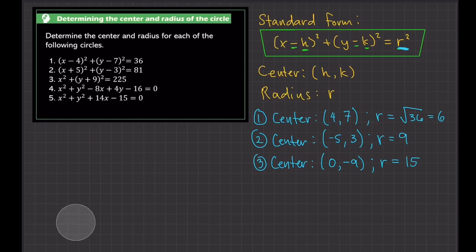Now for numbers 4 and 5, these are written in general form. What we need to do is convert or transform these equations into standard form, because in general form we cannot easily identify the center and radius. So for number 4, we are going to rearrange the terms.